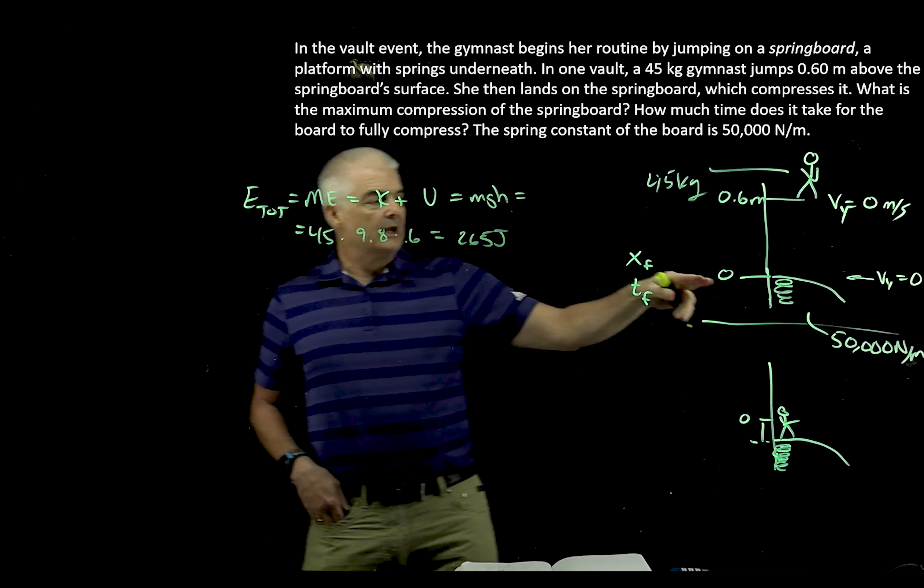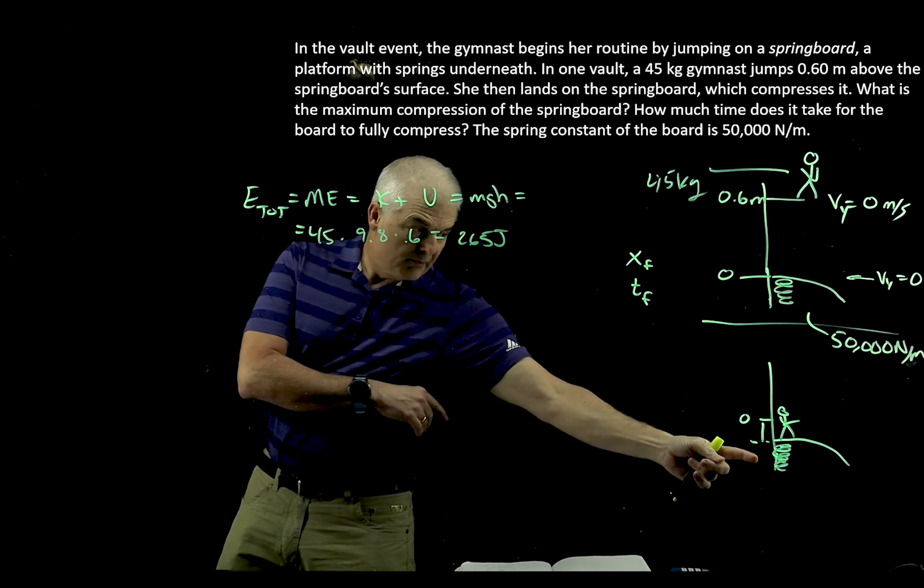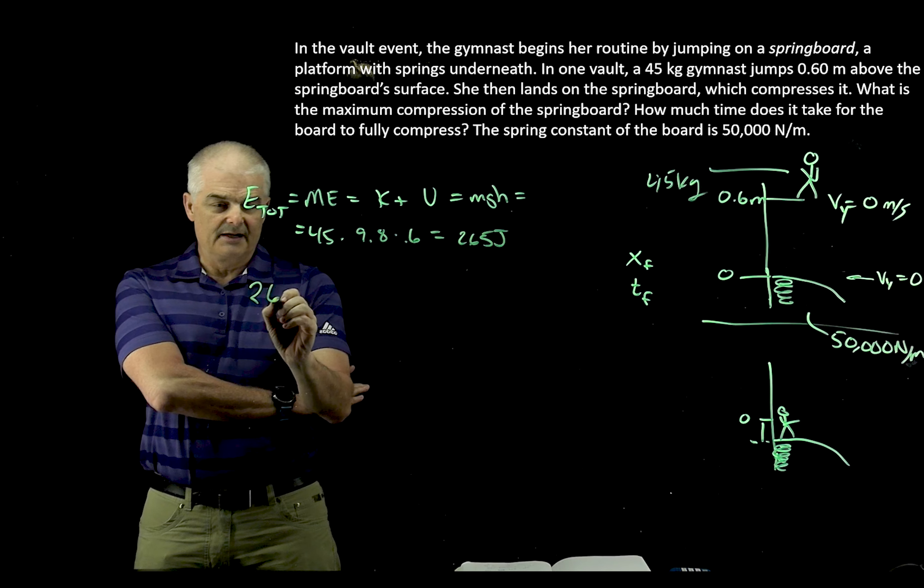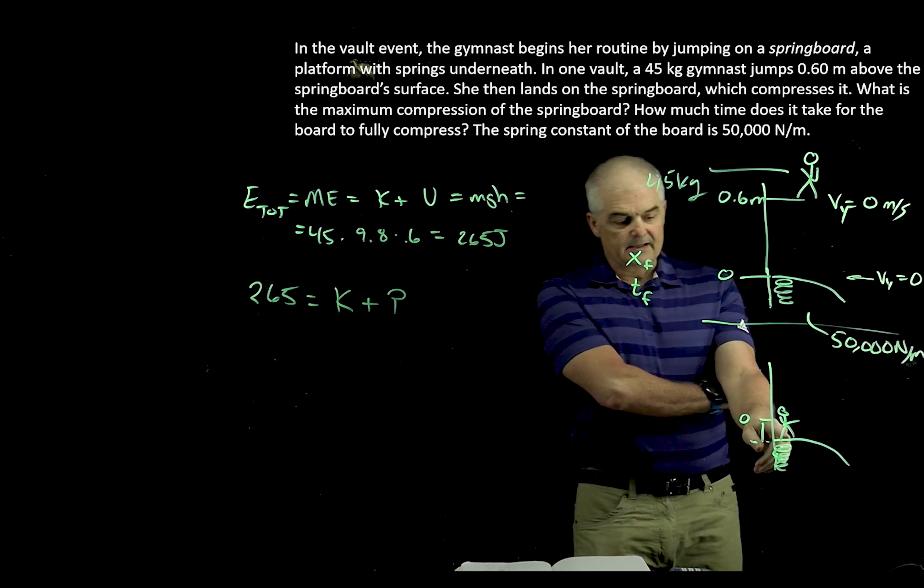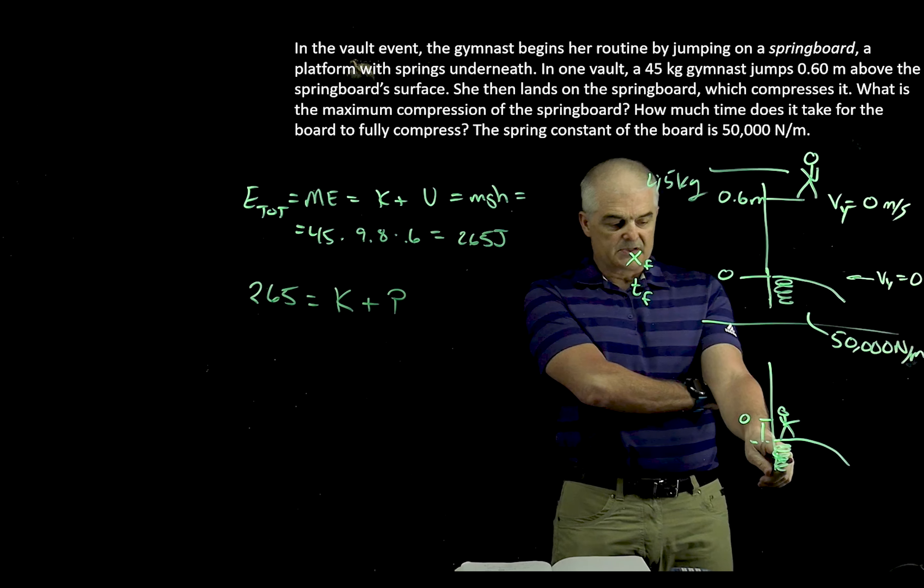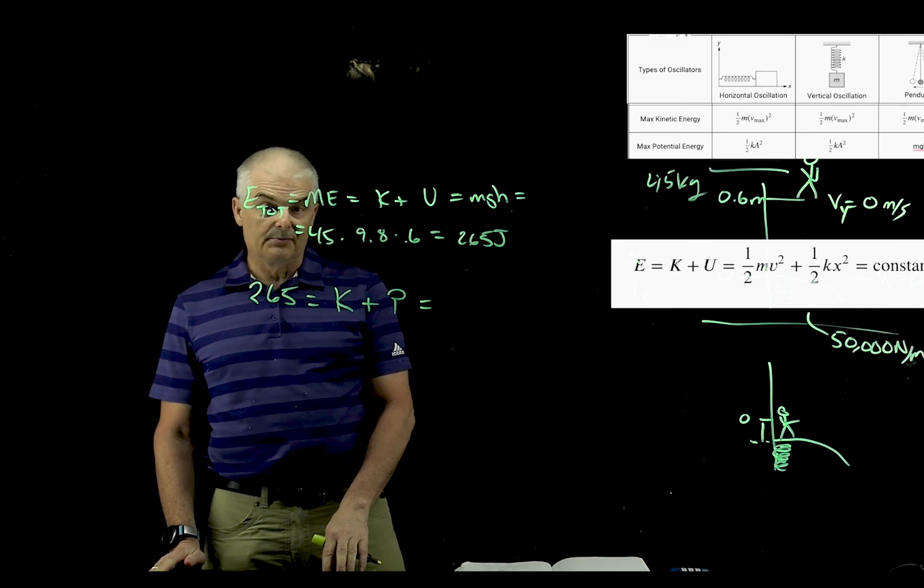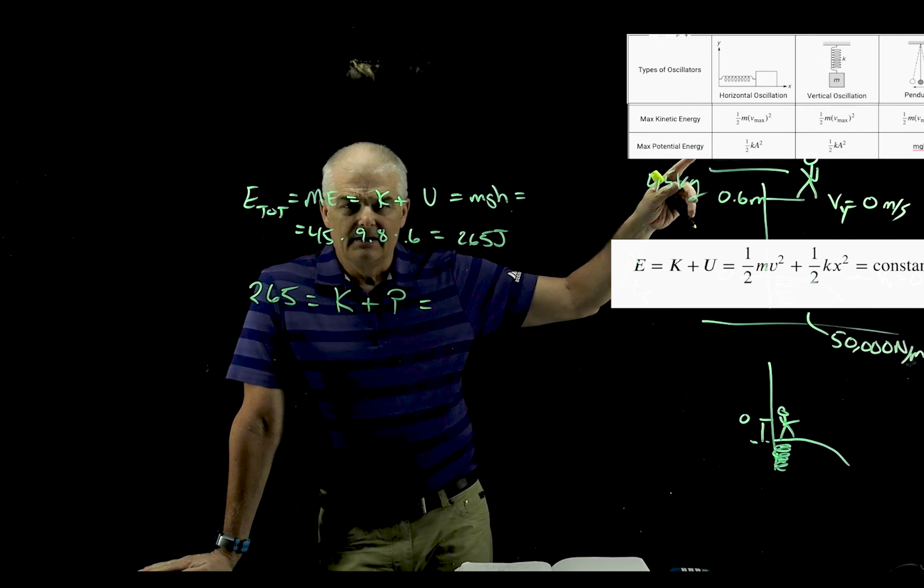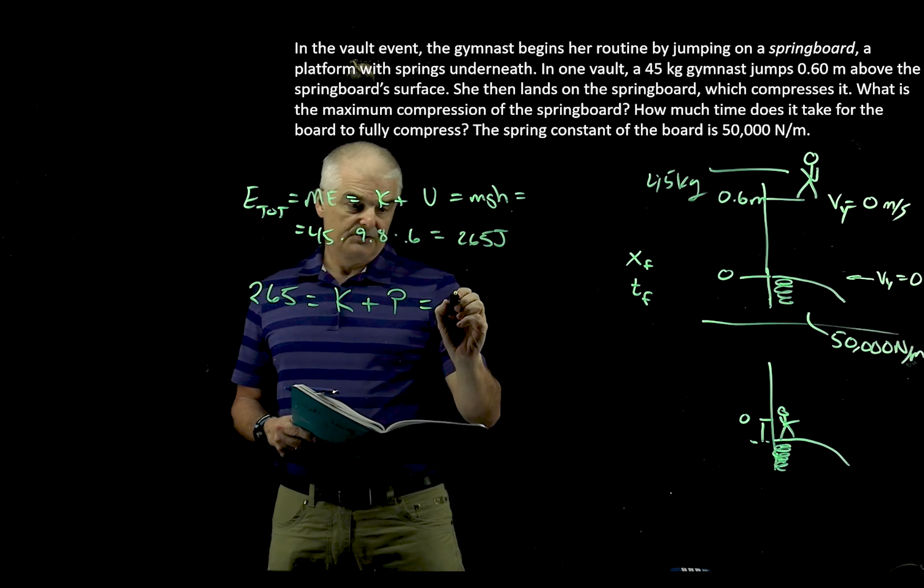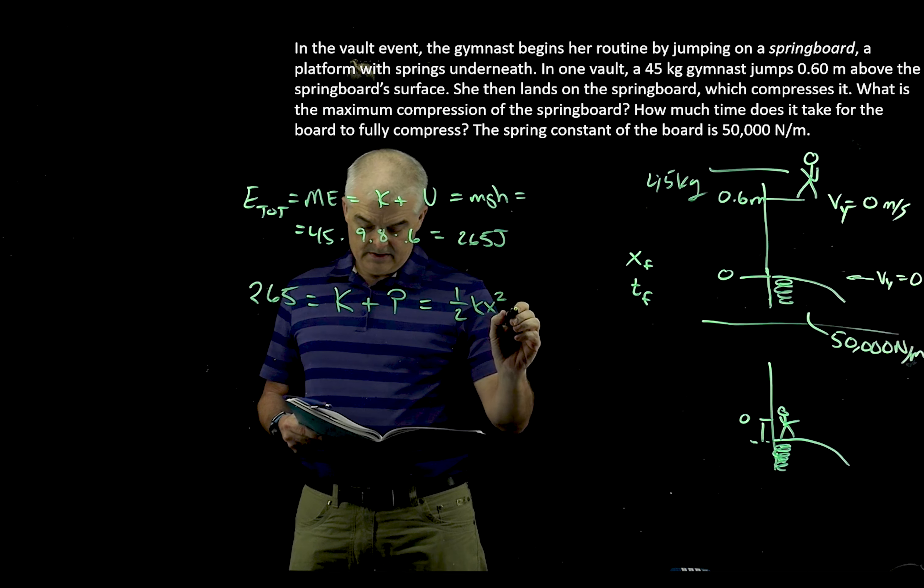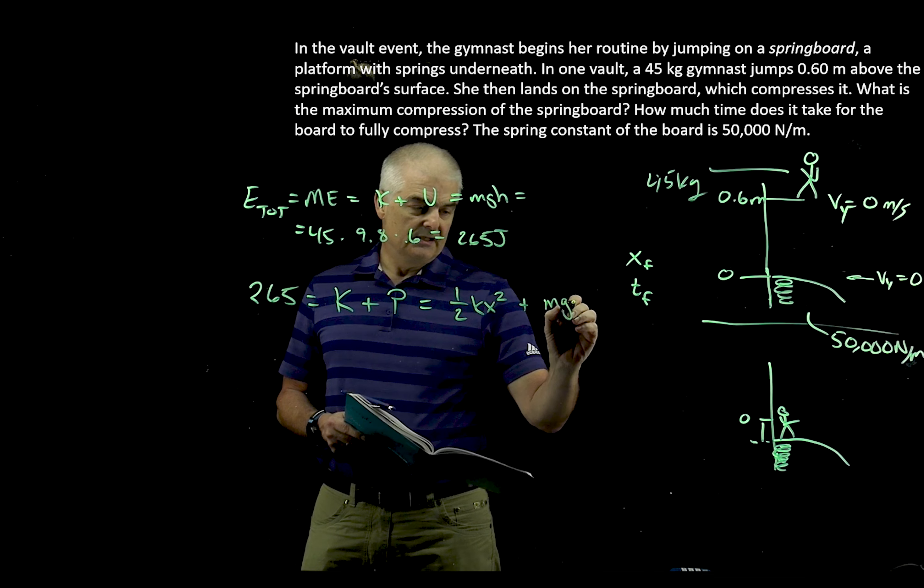But when I now solve for how far the spring has compressed, let's think about this. How much energy does she have here? So what we can say is the total energy, 265, would be equal to the kinetic plus the potential. She's got kinetic energy because she's still moving at this point. And she also has potential energy because she has compressed the spring a little bit. So I can say this is equal to the kinetic energy in the spring, which is one-half mV squared.